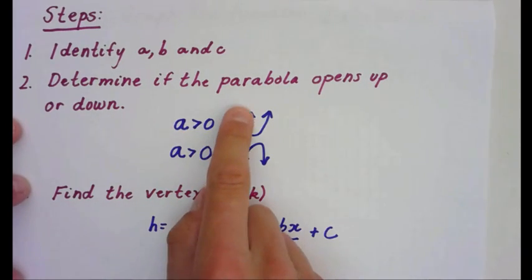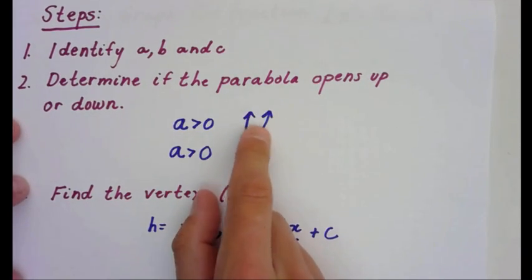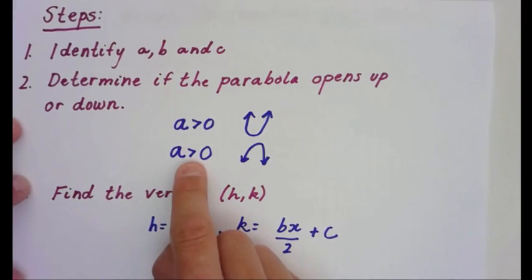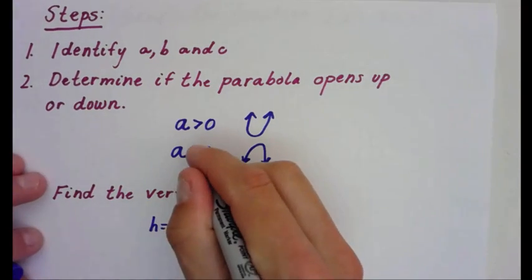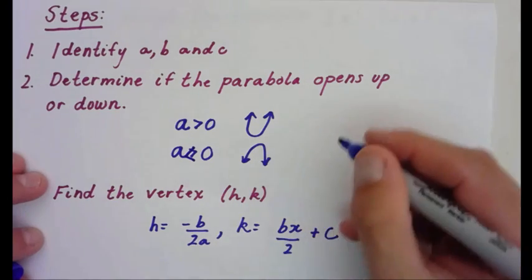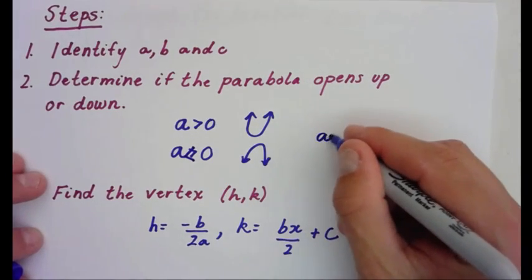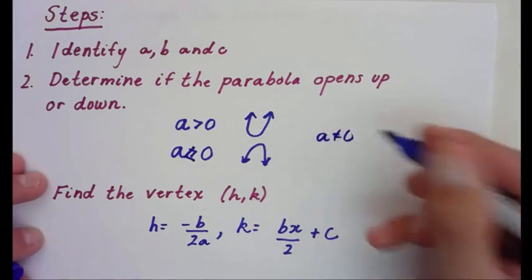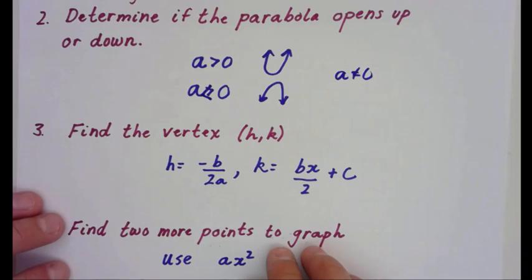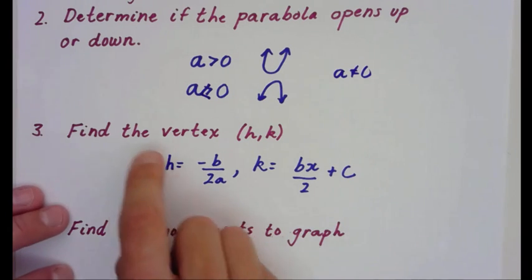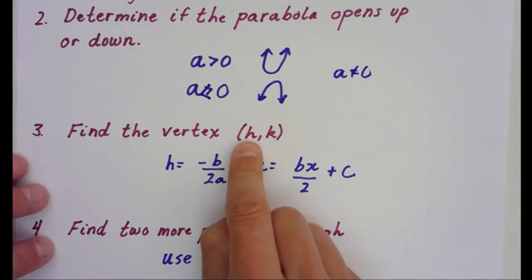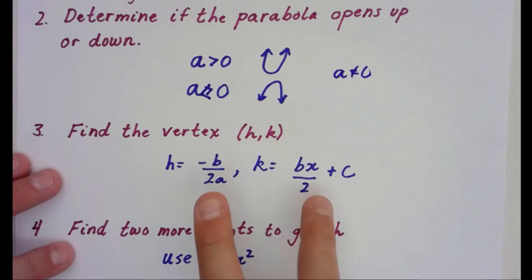If a is greater than 0, remember that parabola is that u shape, we're going to open up. And if a is less than 0, we would go down. Remember, a does not equal 0, because if it does, we would have a linear equation. We're going to find the vertex h and k, so remember h is your x value and k is your y value.